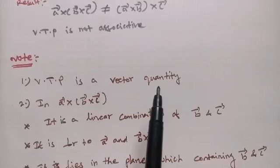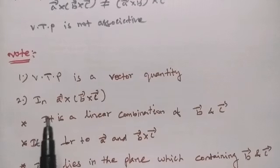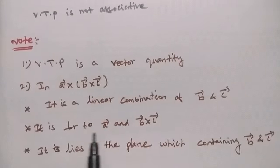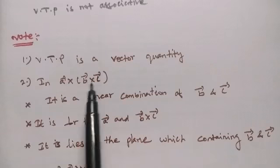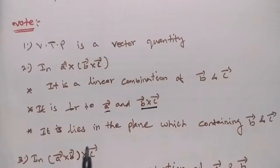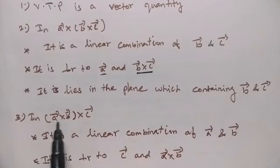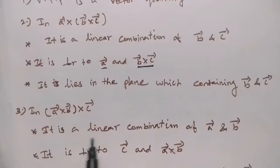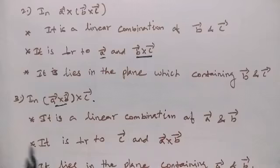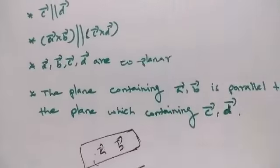In A x B x C, it is a linear combination of B and C. It is perpendicular to A and lies in the plane containing B and C. In A x B x C, it is a linear combination of A and B. It is perpendicular to C and lies in the plane containing A and B.